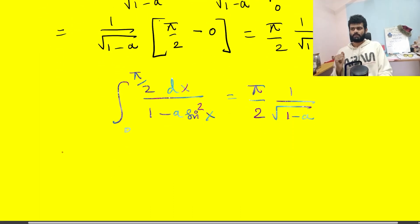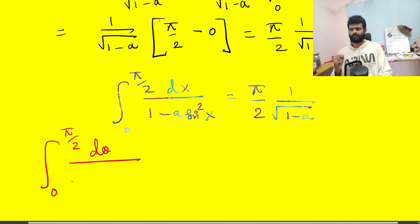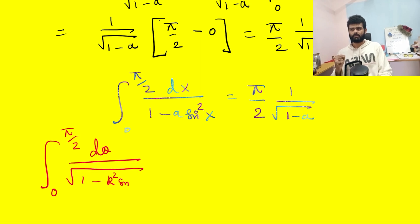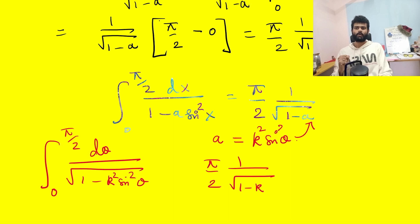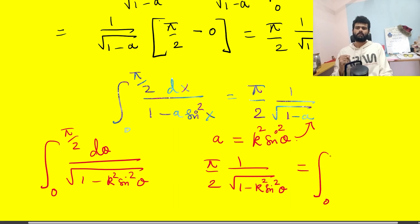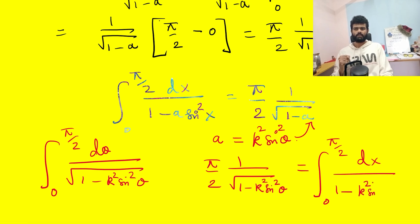Now the magic happens. The integral we are after is the integral from 0 to π/2 of dθ over √(1 − k² sin²θ). I substitute a = k² sin²θ into our proved formula, so π/2 · 1/√(1−k² sin²θ) equals the integral from 0 to π/2 of dx divided by (1 − k² sin²θ · sin²x).